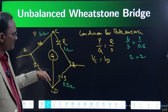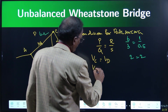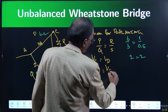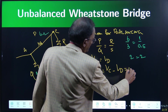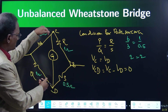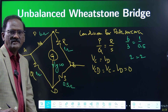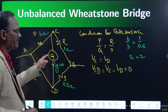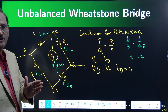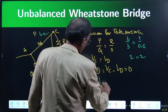When the bridge is balanced, the potential at C equals the potential at D, so Vc = Vd. The potential difference Vcd = Vc − Vd = 0. Since there is no potential difference, no current flows through the galvanometer. The galvanometer shows zero — this is known as the null position.